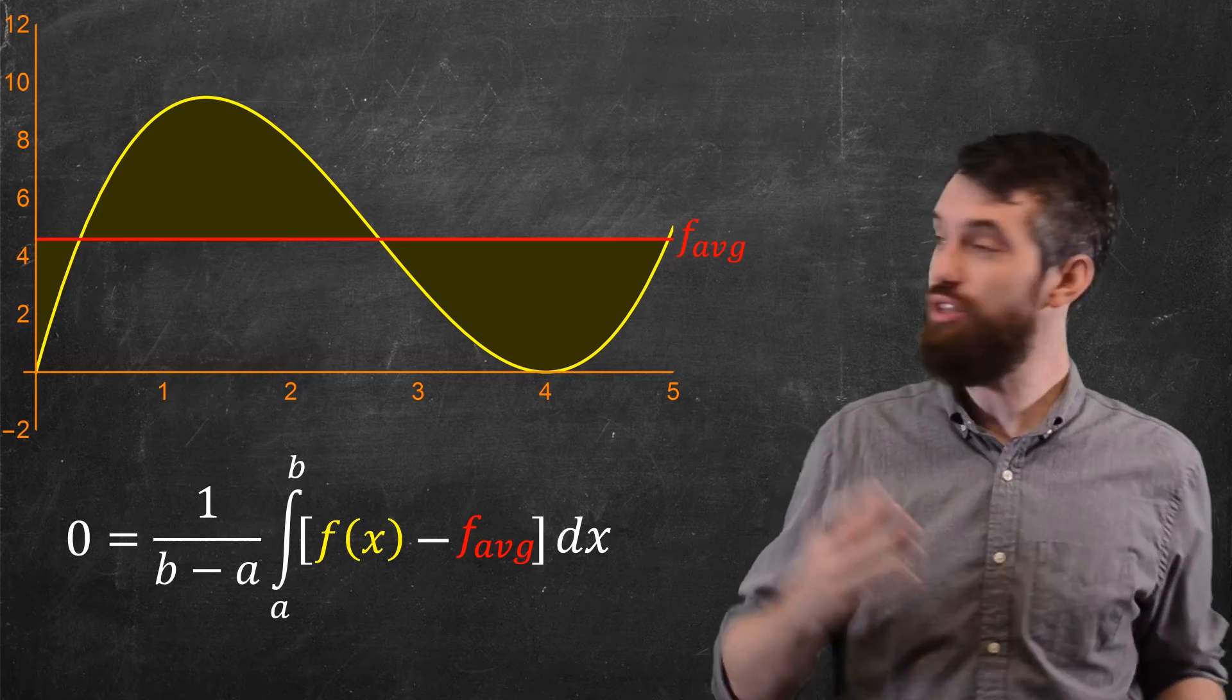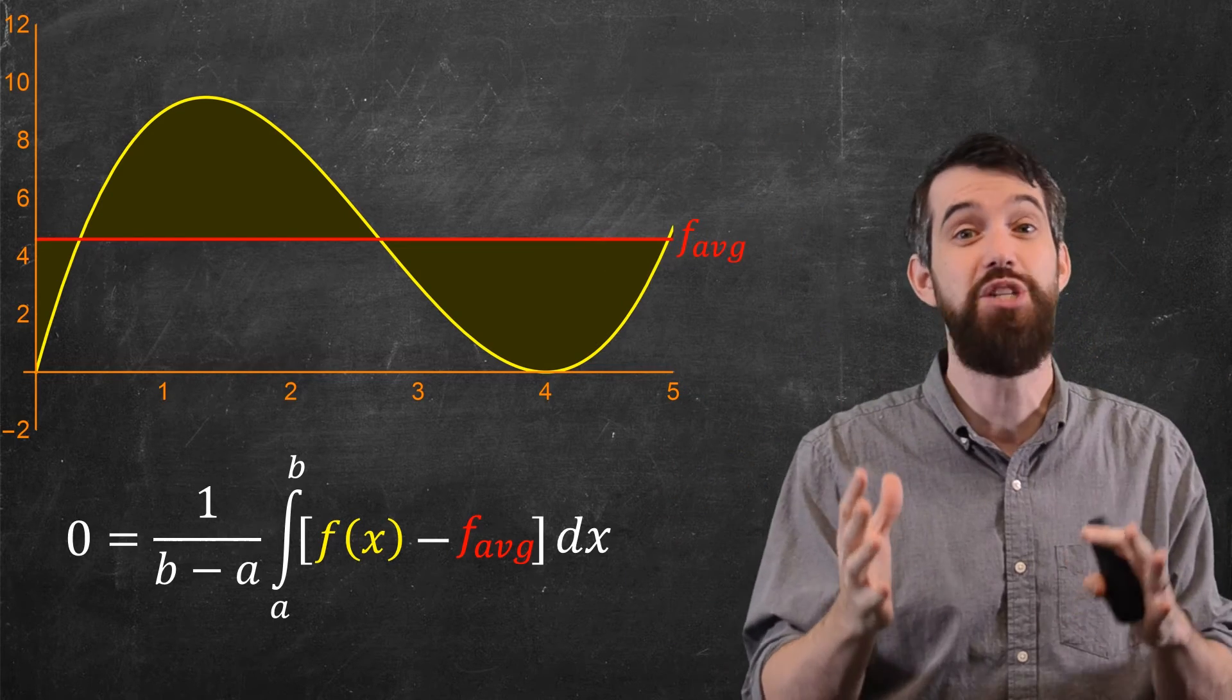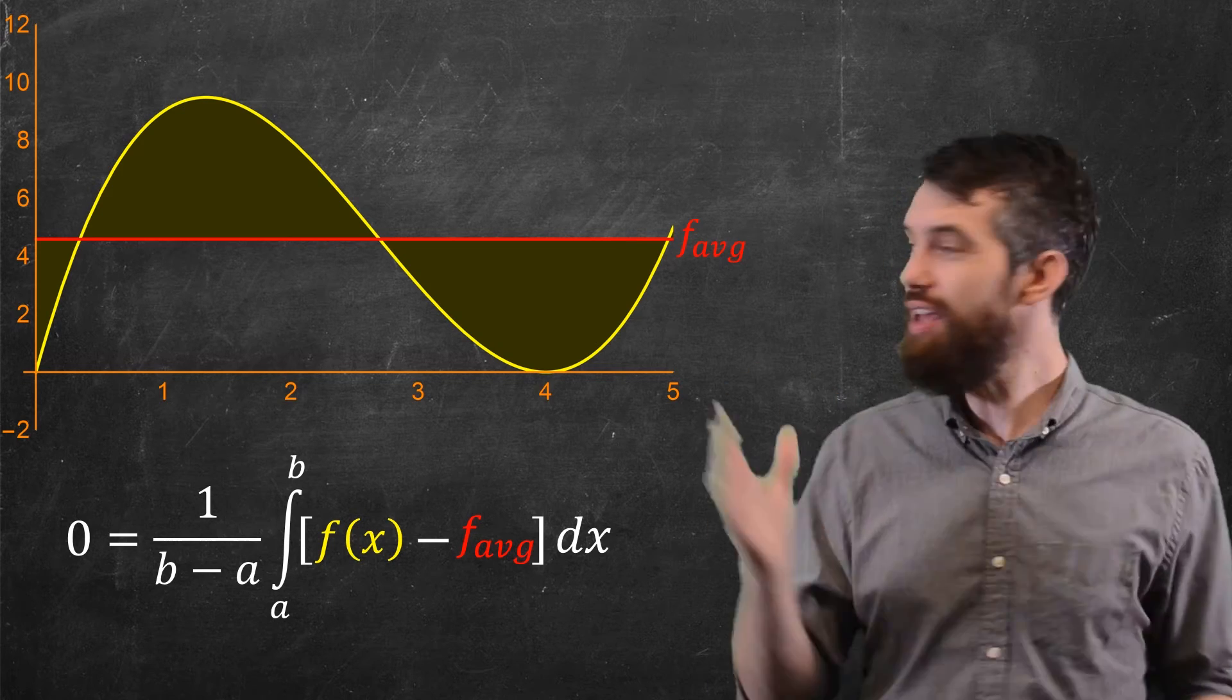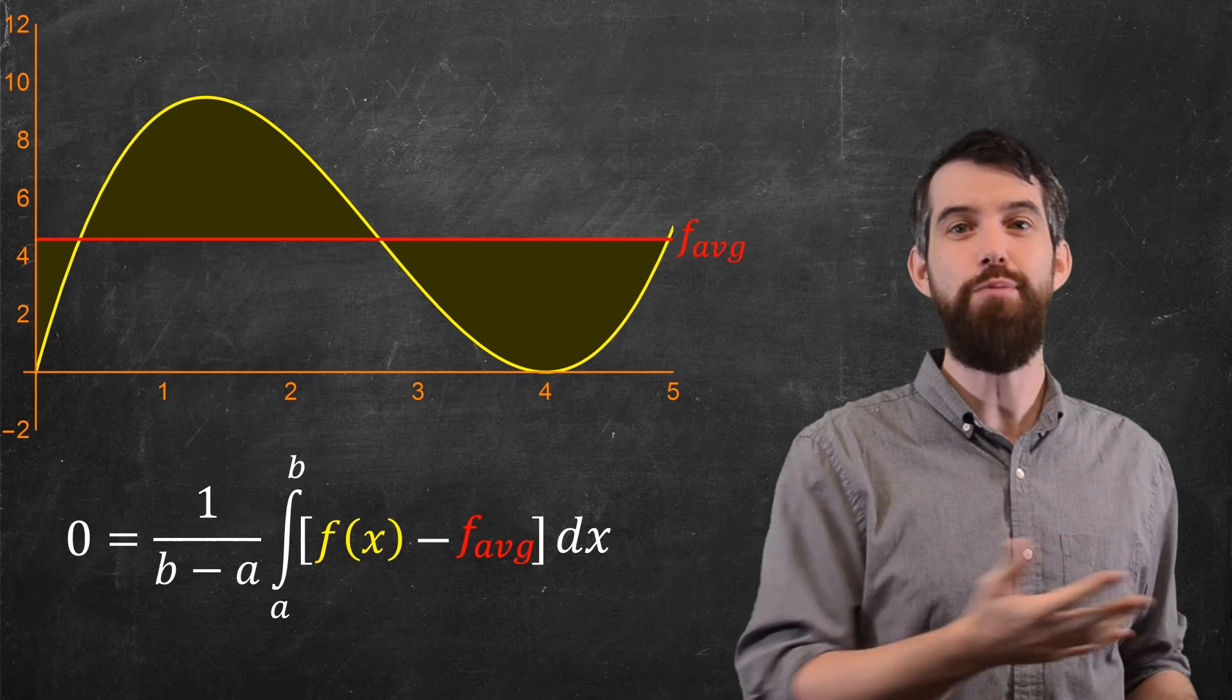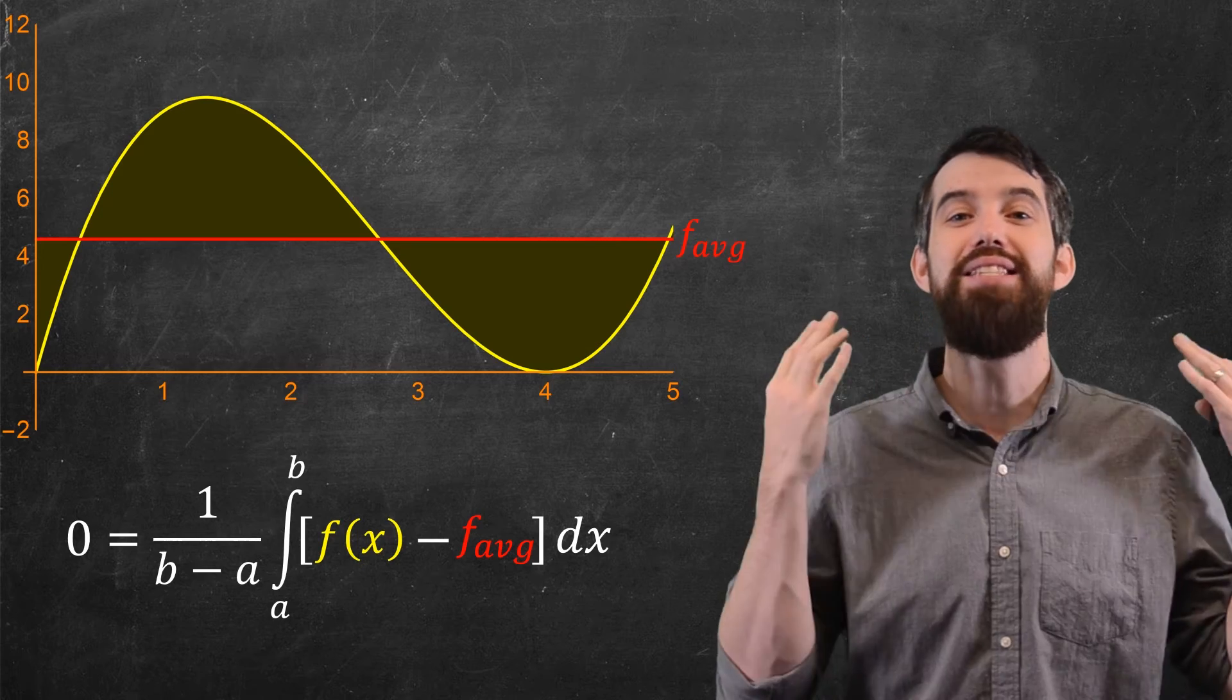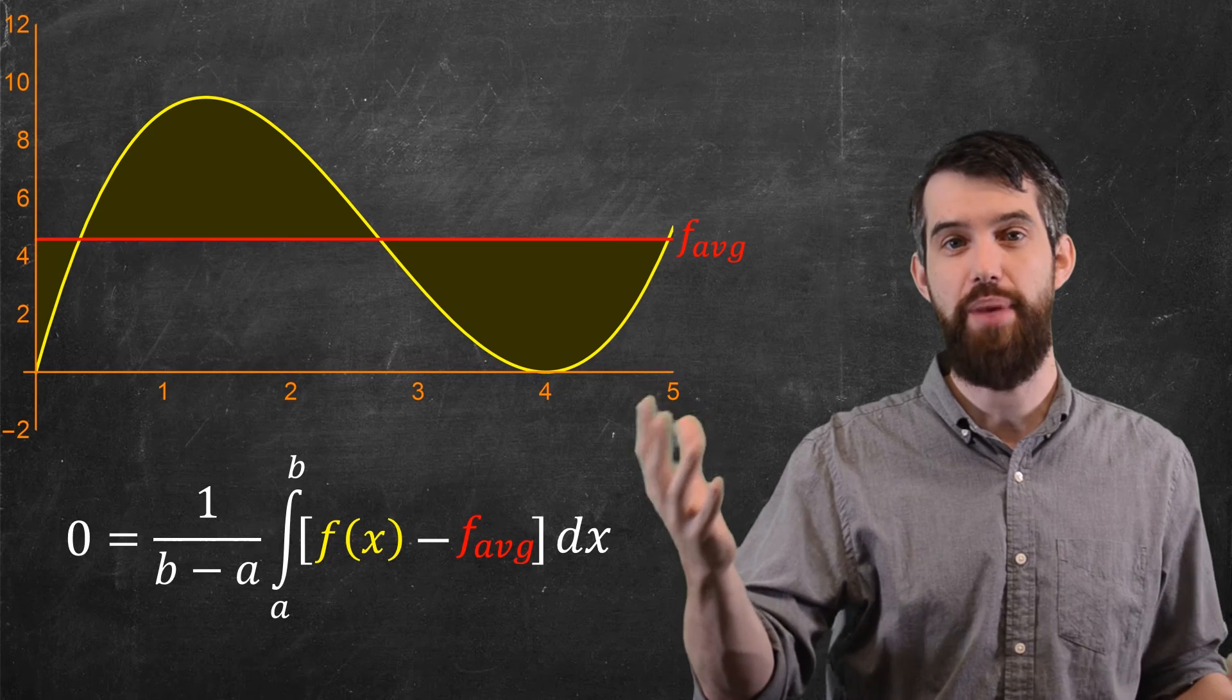Or the way I can interpret it is that this one region at the top here that's above f average, its area, has to be the same thing as the area of all the stuff beneath it. So the f average sort of cuts this exactly in two. You have some portions of area which are above it and some portions that are beneath it, and it has to add up to exactly zero. So the region above and the regions below are precisely the same area.